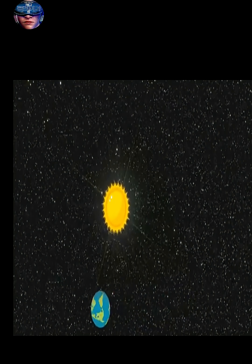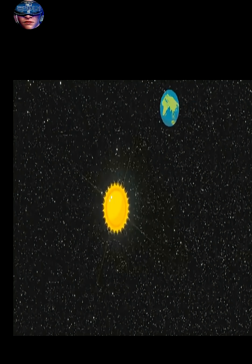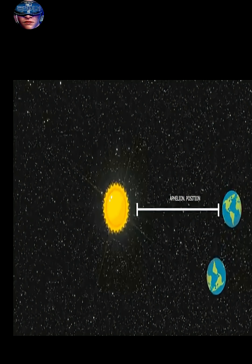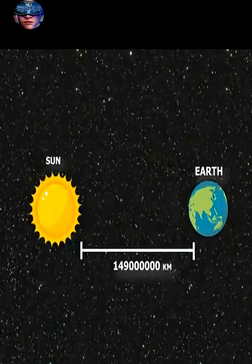We can also use the speed of light to measure distances in our solar system. The sun is about 150 million kilometers away, which equals 8.3 light minutes from Earth.